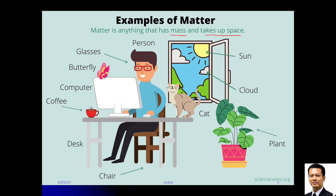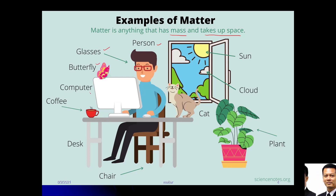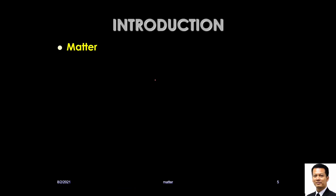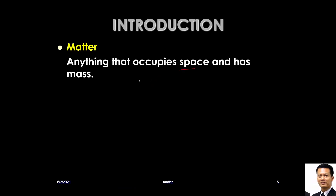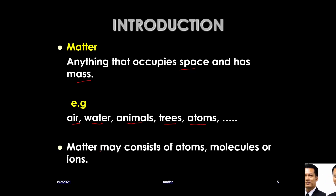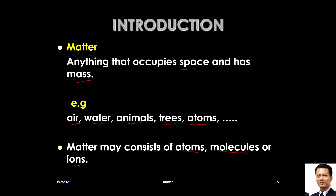Matter is anything that has mass and takes up space — the space we also call volume. So this person has mass and volume, glasses has mass and volume, butterfly, computer, coffee, desk, chair, cat, cloud, sun, plant — everything here is matter. Matter can be air, water, animals, trees, or atoms. Matter may consist of atoms only, molecules (two or more atoms), or ions (positive and negatively charged).